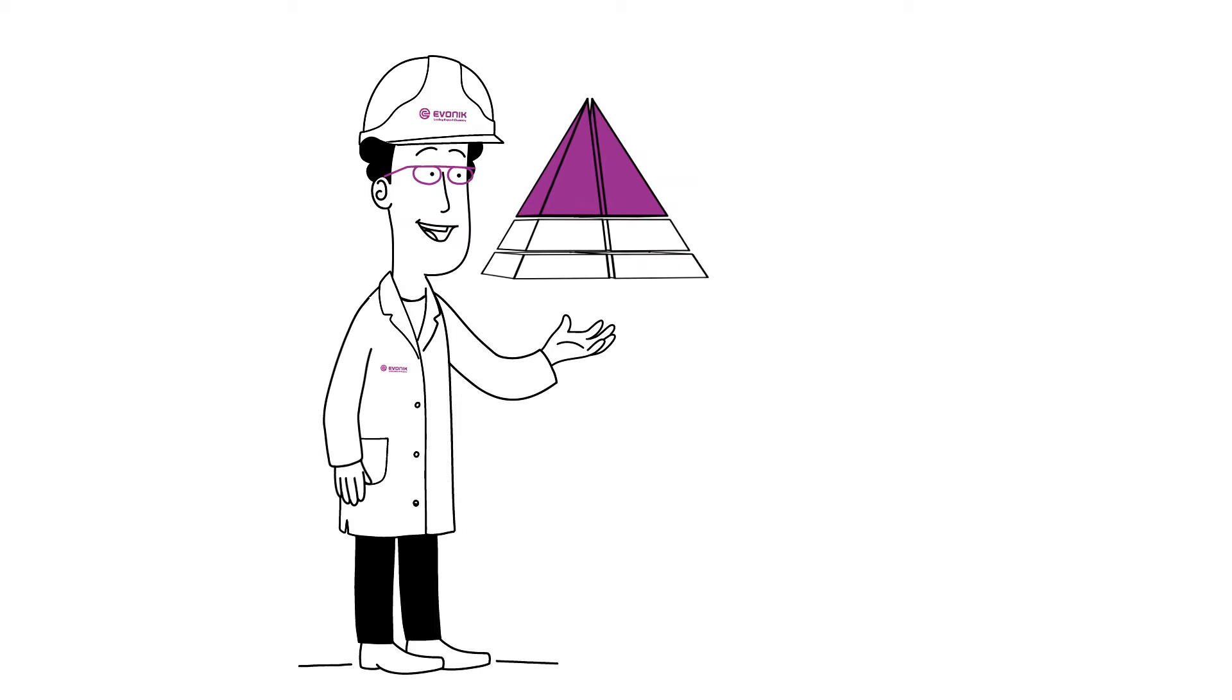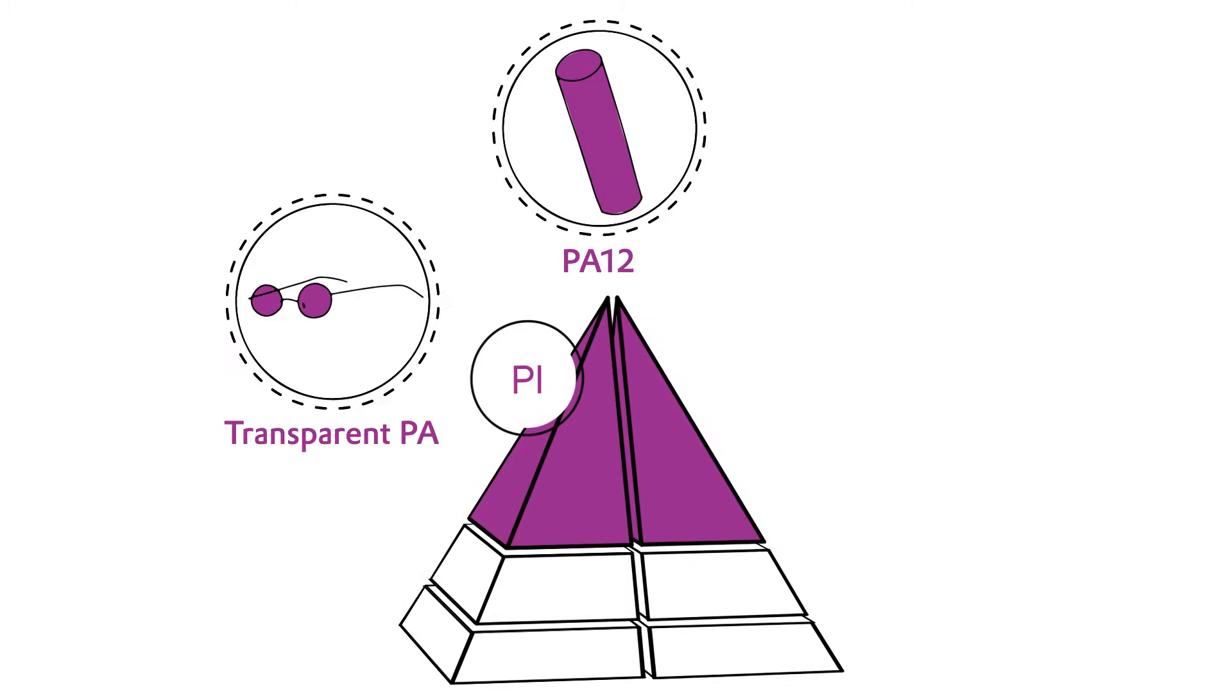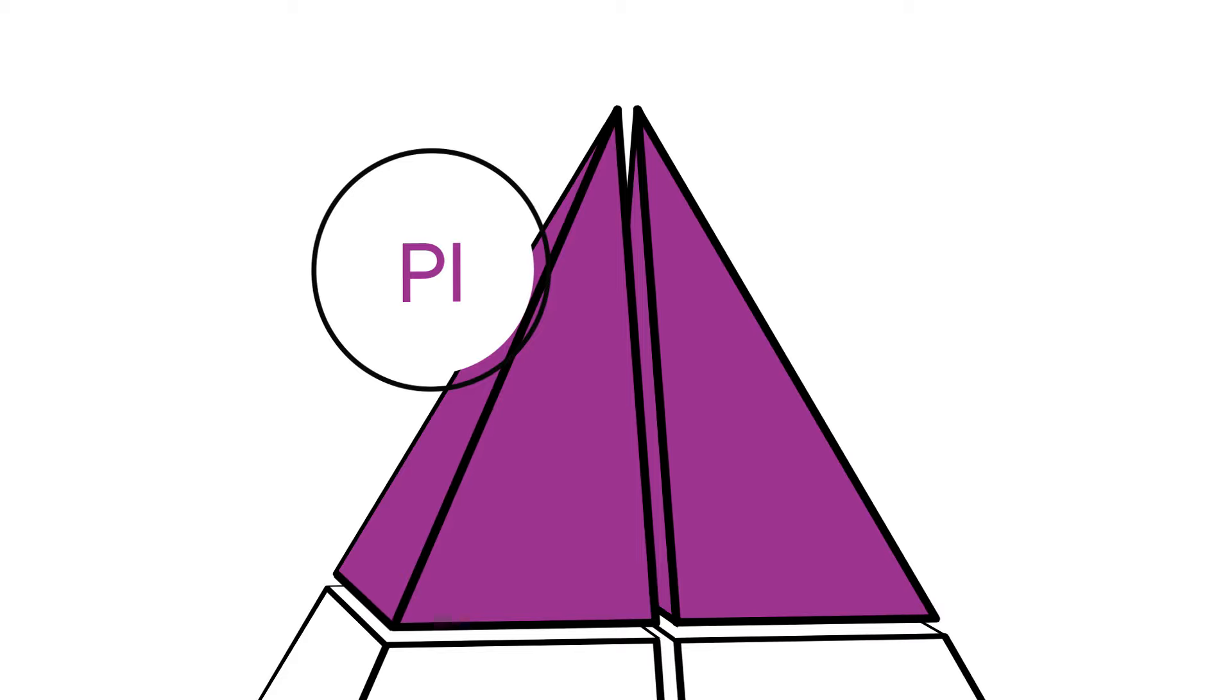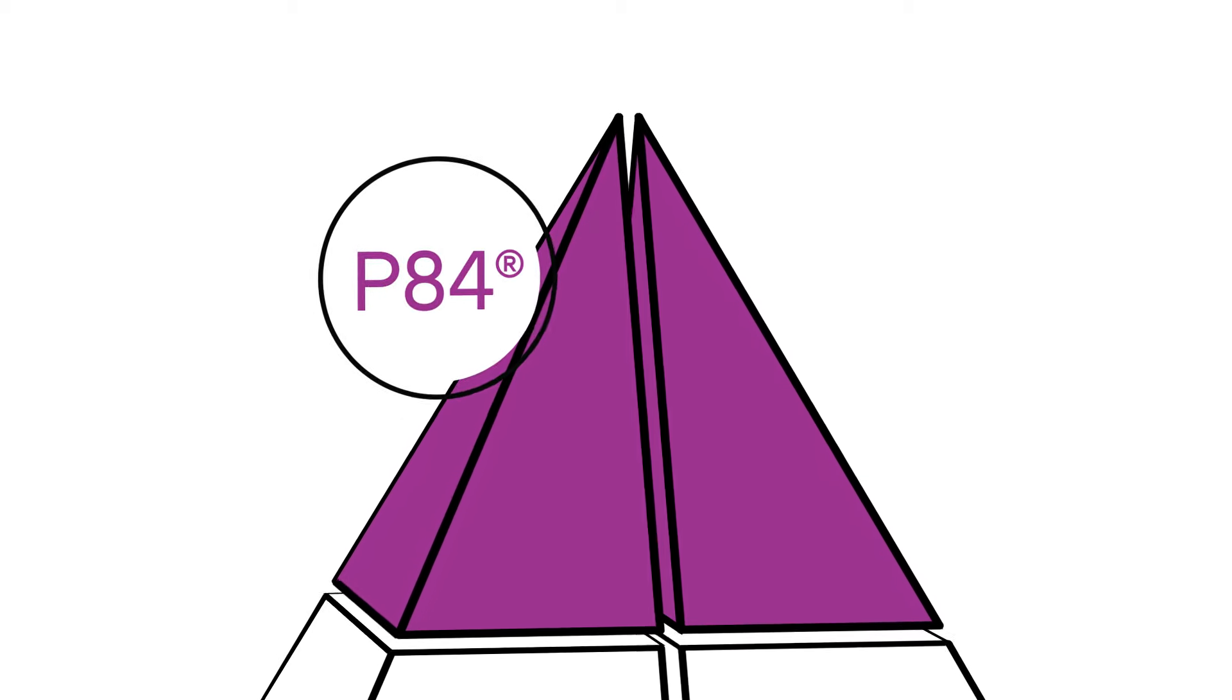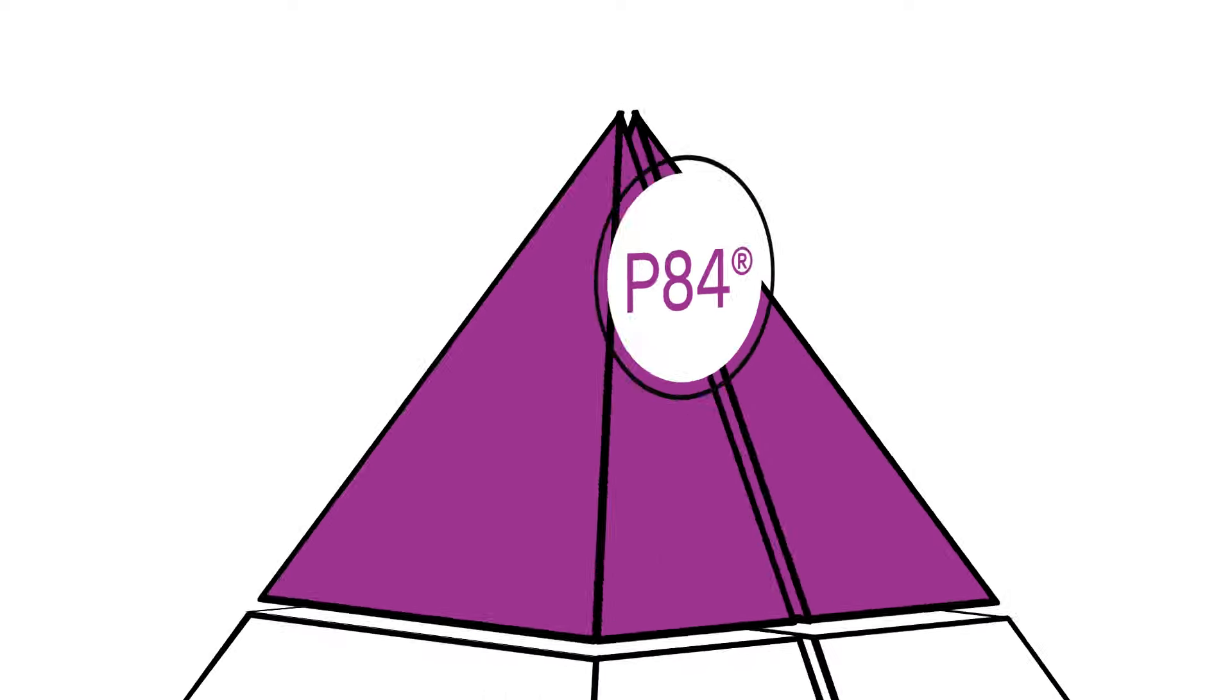Polymers are amazing high-performance materials. They can replace glass, metal, or even human bones. Besides other high-performance polymers, Evonik offers P84-branded polyamides that are highly temperature-resistant lightweight materials with some pretty outstanding properties.